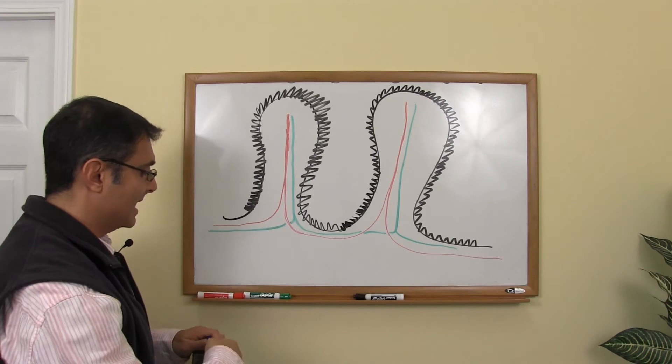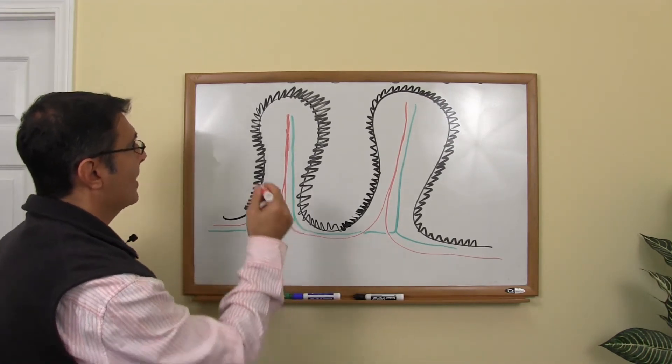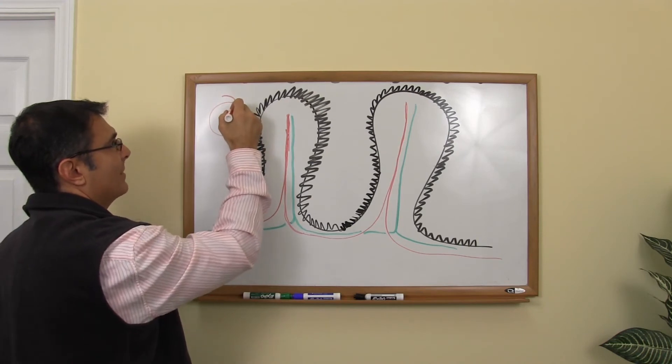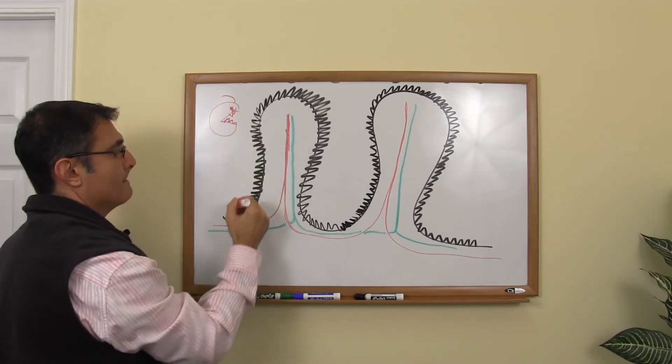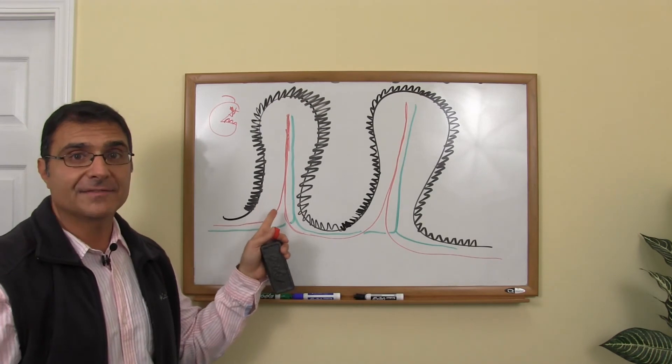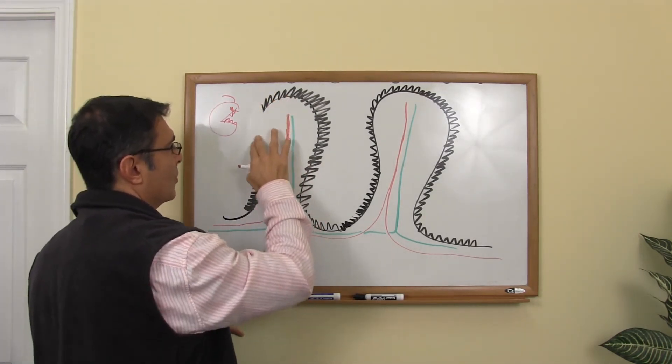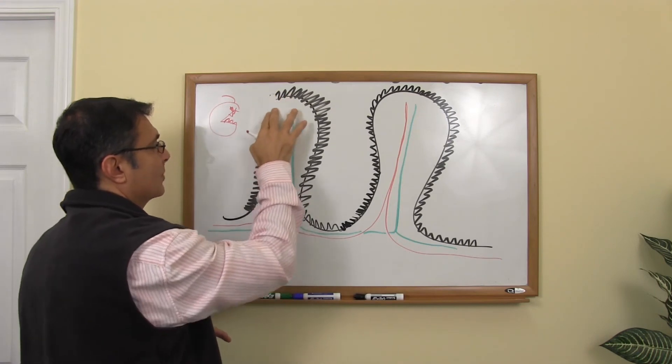And one of the things that these harmful bacteria do is they start to destroy and damage our micro villi, these protective fingers. They start to eat or destroy, damage these protective fingers.